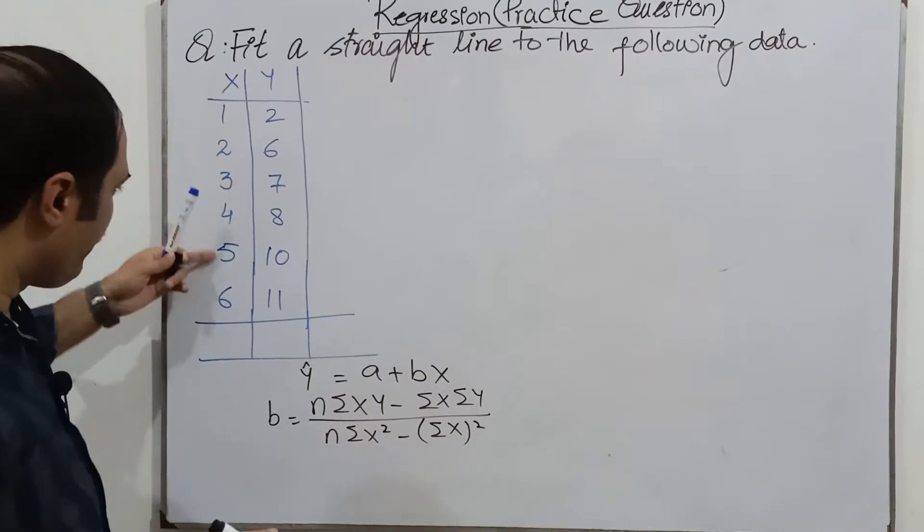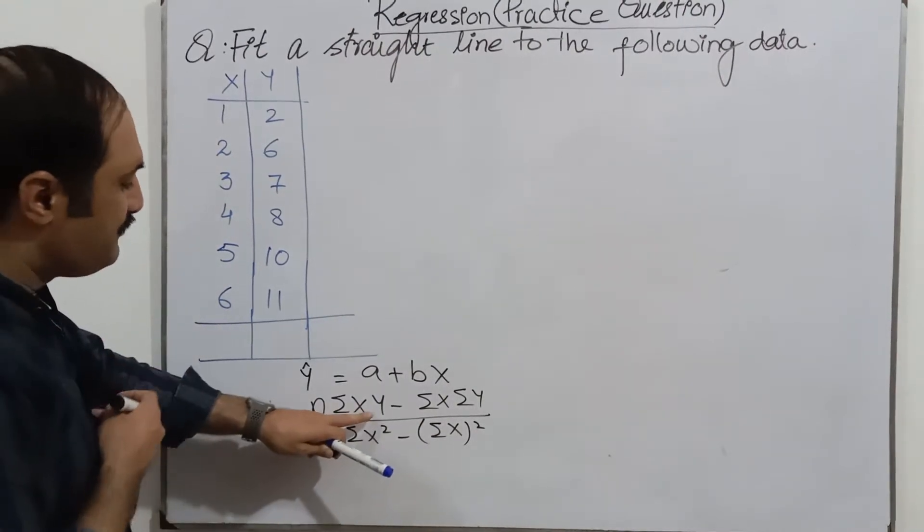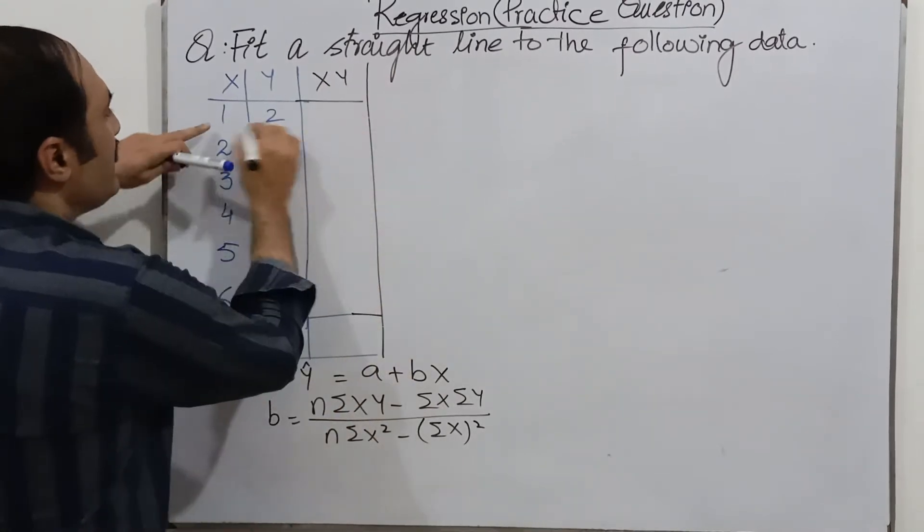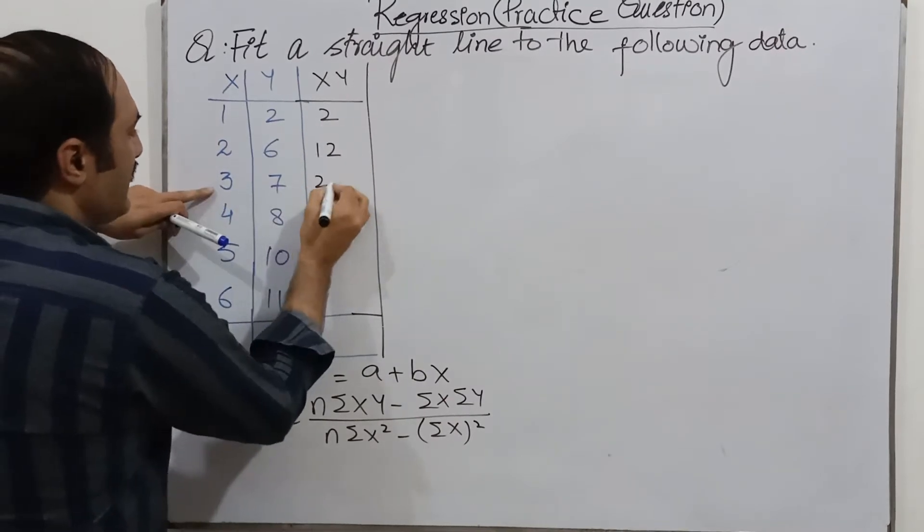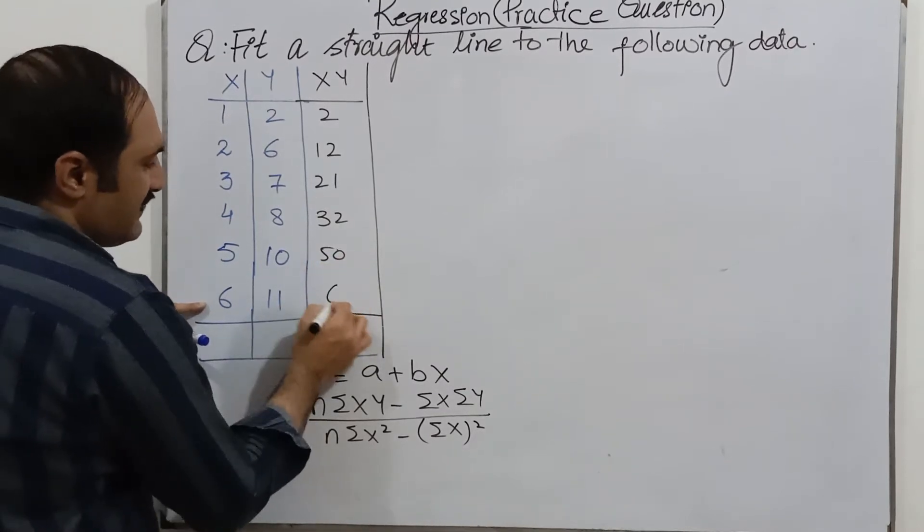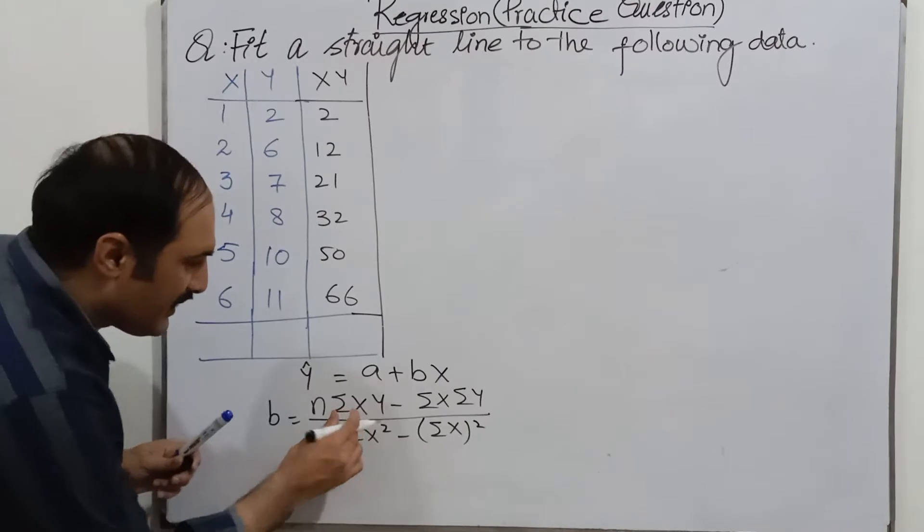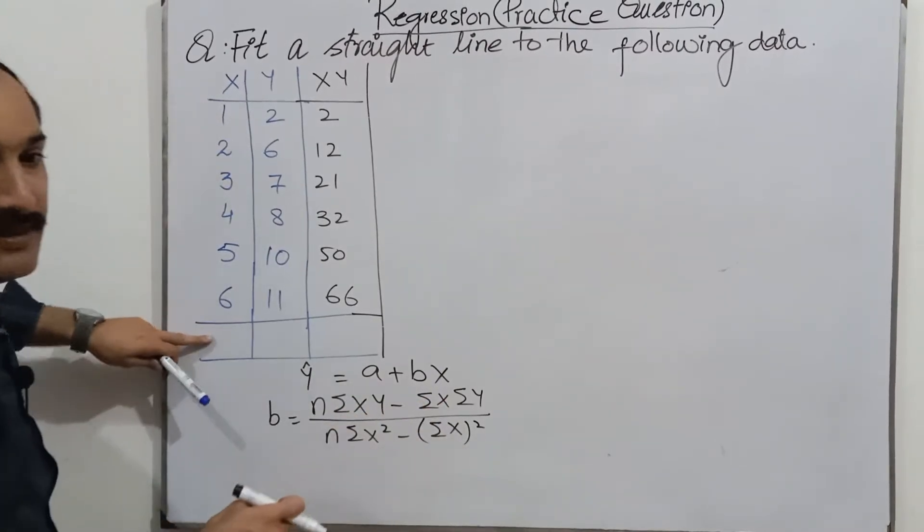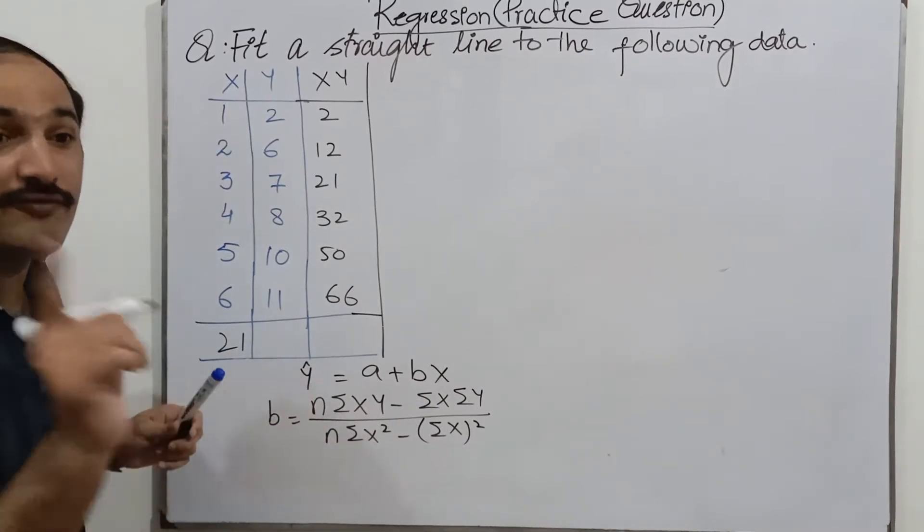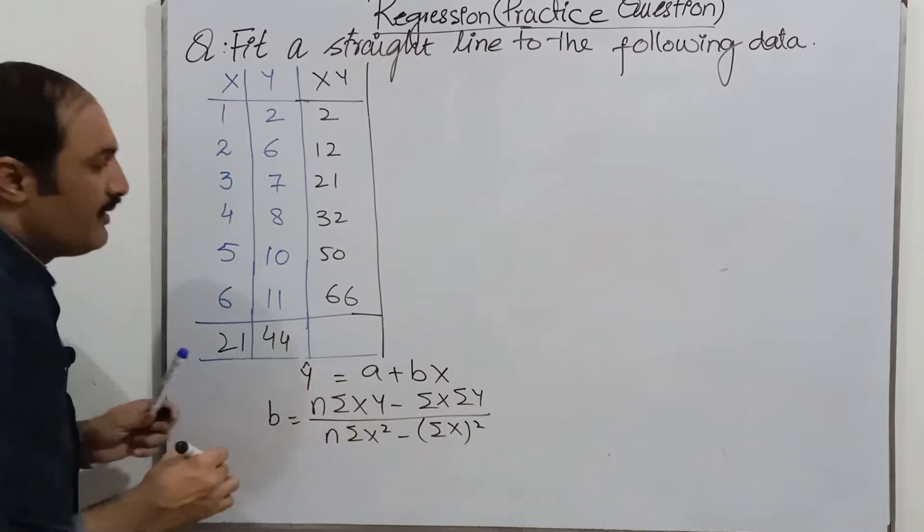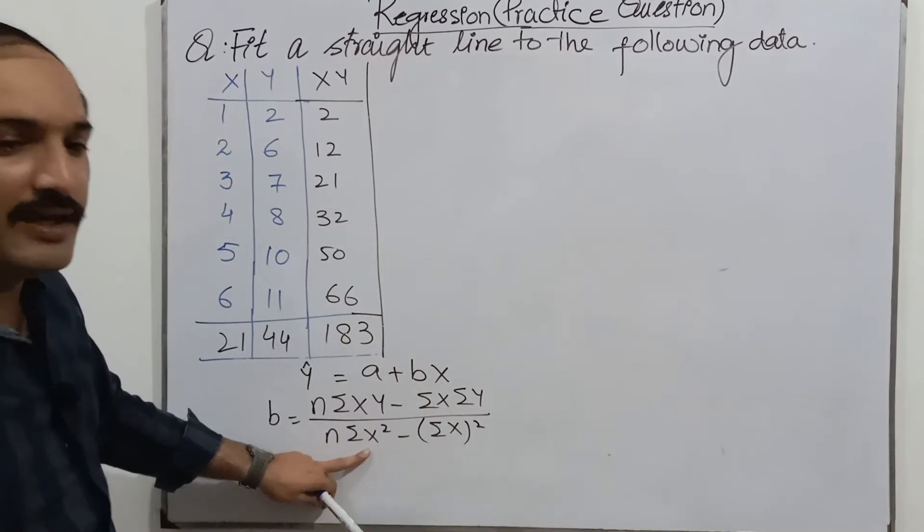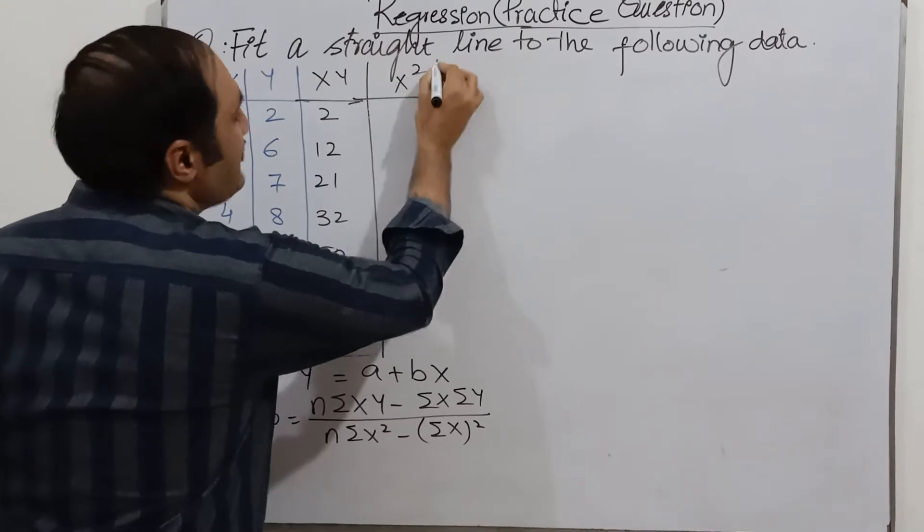n is one two three four five six. Here is x, y is x, y is. Two ones are two, six twos are twelve, seven threes are twenty one, eight fours are thirty two, five tens are fifty, eleven six six six. Okay, next is summation x, its sum is twenty one, and summation y, its sum is forty four, and its sum is one eighty three.